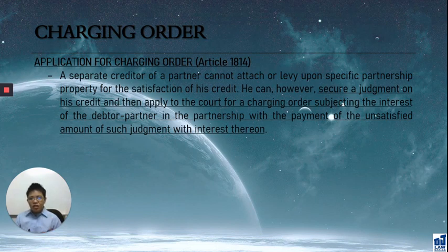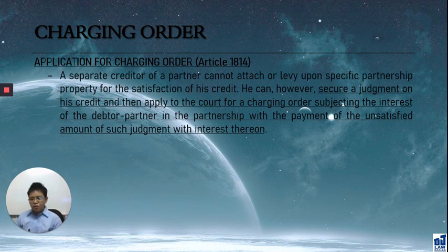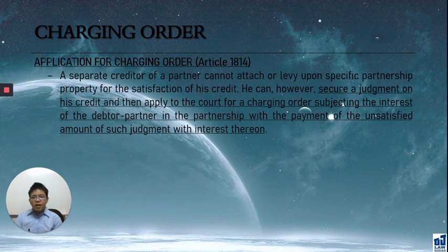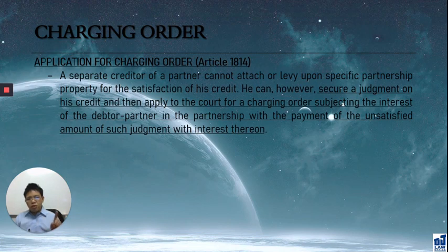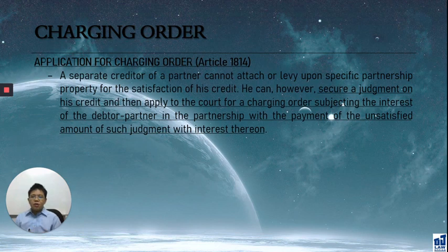Once a charging order is issued, all profits supposed to be received by A from the partnership will go to me instead. His interest in the partnership is charged. However, you must relate this with Article 1827 — when it comes to partnership property, partnership creditors are preferred. So even if A's interest is charged, if the partnership itself has creditors, the partnership creditors must be paid first using A's interest before paying A's personal debt to me through the charging order.